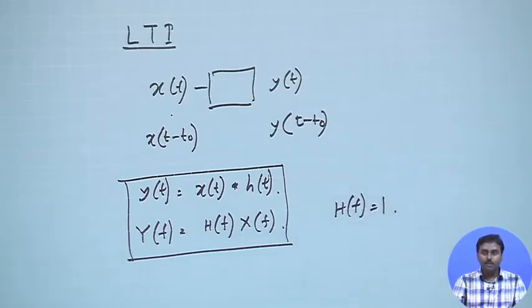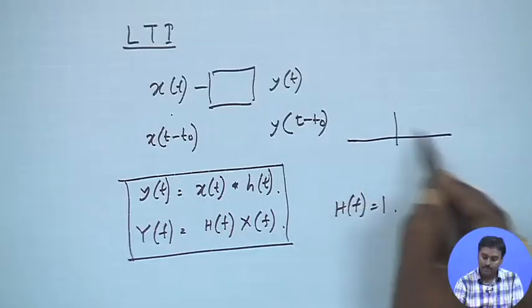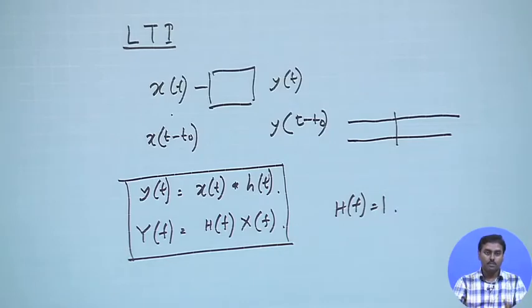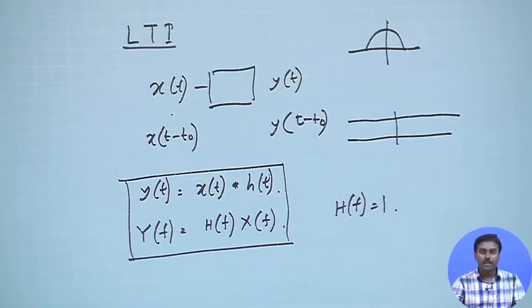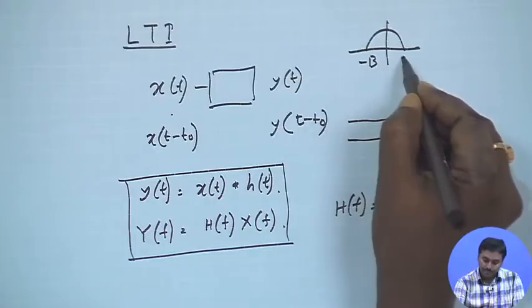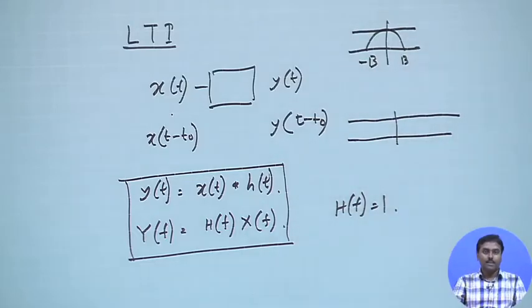If x(f) is band-limited to bandwidth B, then I only need to ensure that within that band, |H(f)| = 1. Beyond that, whatever happens I do not care, because there is no frequency component of that signal beyond that band. So within minus B to plus B, H(f) must be 1. Beyond that it can be anything. If the signal is not band-limited, then mod H(f) must be 1 at all frequencies.